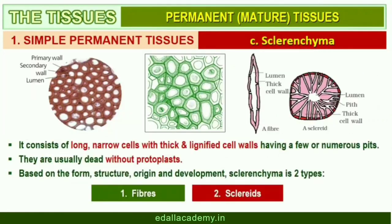Sclerenchyma consists of long, narrow cells with thick and lignified cell walls having few or numerous pits. They are usually dead and without protoplasts. On the basis of variation in form, structure, origin, and development, sclerenchyma may be either fibers or sclereids.